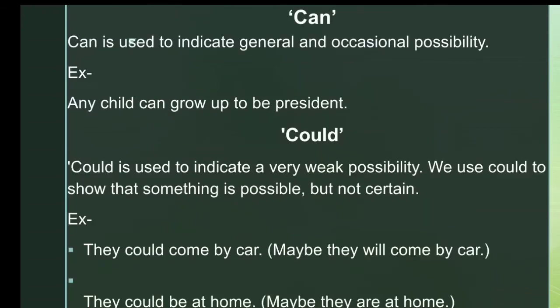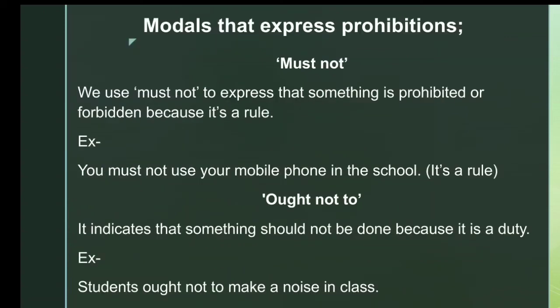'Can' is used to indicate general and occasional possibility. For example, 'Any child can grow up to be president.' 'Could' is used to indicate a very weak possibility — something that is possible but not certain. For example, 'They could come by car — maybe they will, but it's not certain' and 'They could be at home — maybe they are at home.'